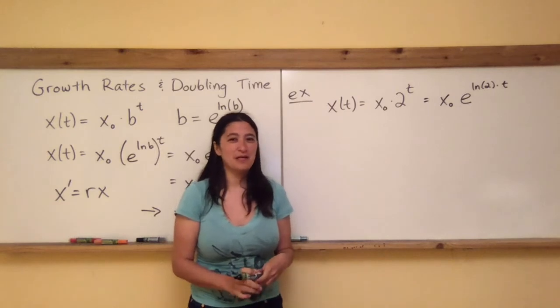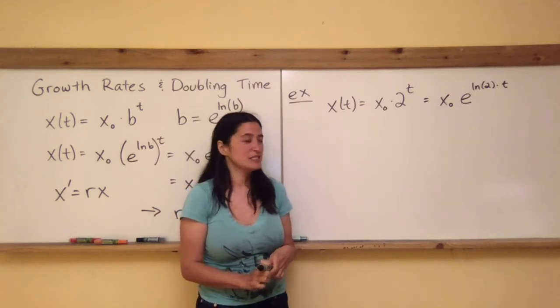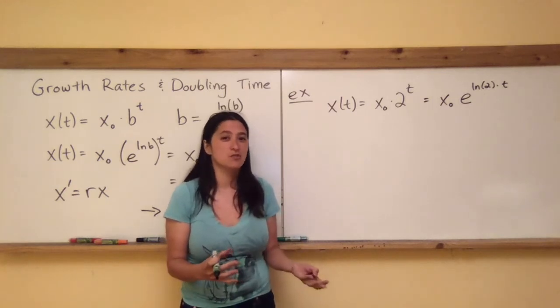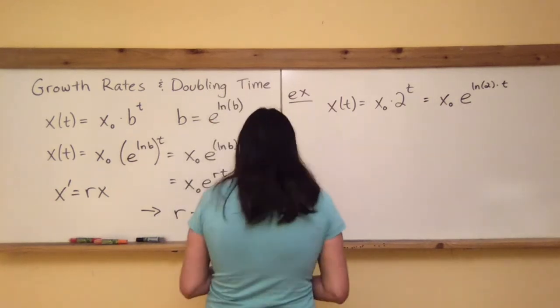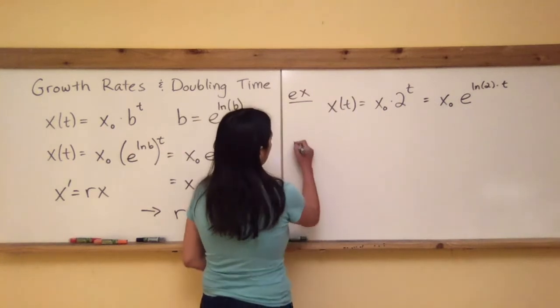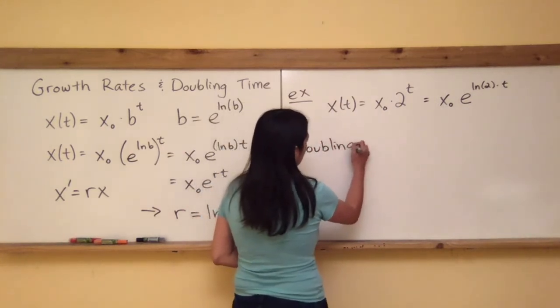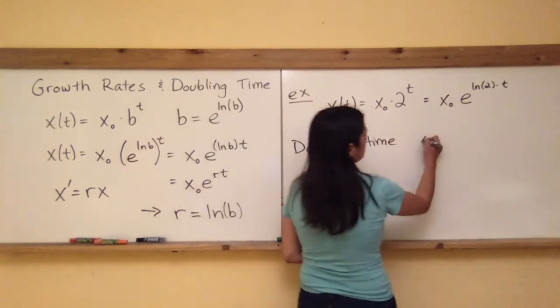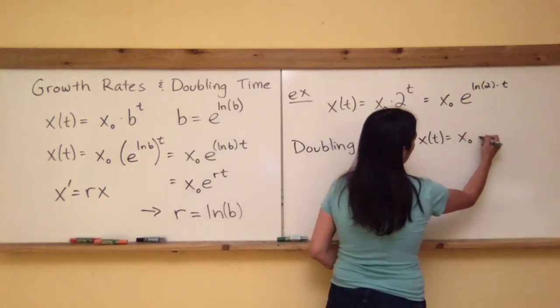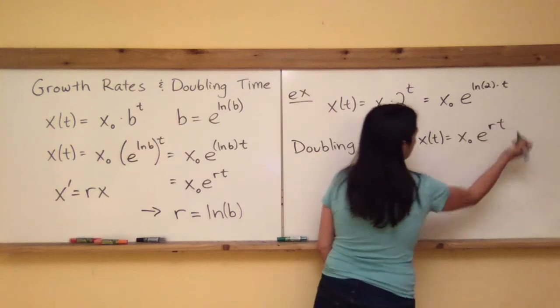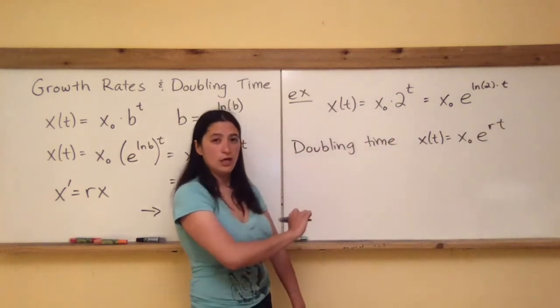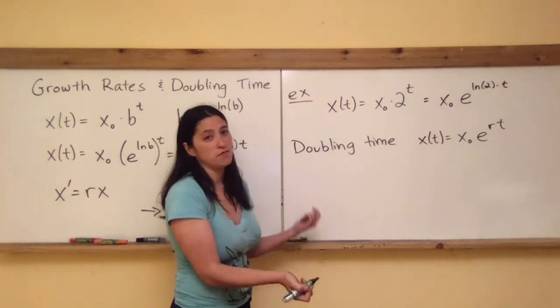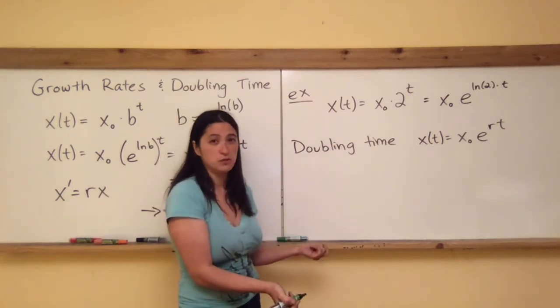Okay, so now let's talk a little bit about doubling time, which is the question of how long does it take for something to become twice as much as what it was before? Let's say that we have something that's growing at an exponential rate, X₀ times e^(RT). Now we want to know how long is that going to take to double. Well, how much of this stuff did I have when time was equal to zero?